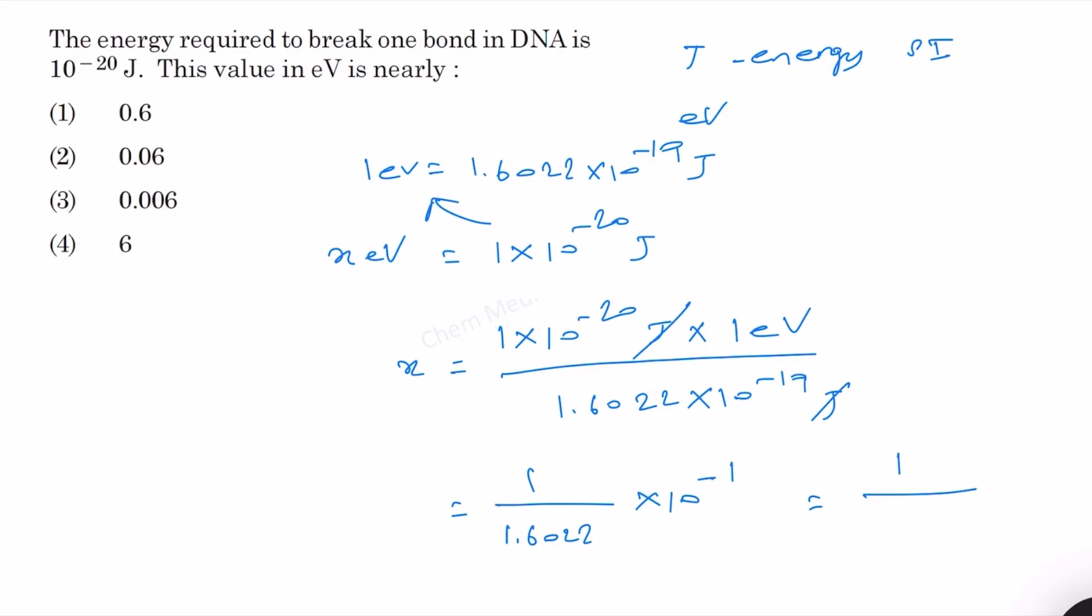Therefore, this is equal to 1 by 16.022. Let us divide 1 by approximately 16. We cannot do that, so raise it to the decimal. So 100 we can divide by 16.